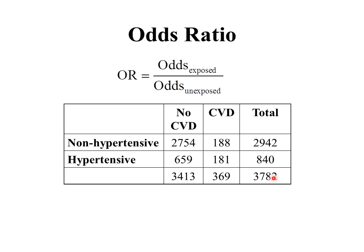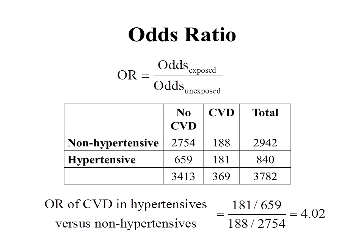Let's look at the same set of data. The exposed here we'll take to be the hypertensives, and the unexposed to be the non-hypertensives. The odds ratio of cardiovascular disease in hypertensives versus non-hypertensives: the odds in hypertensives is 181 divided by 659 (events divided by non-events), and for the non-hypertensives, 188 divided by 2,754. We do that arithmetic and we get 4.02.